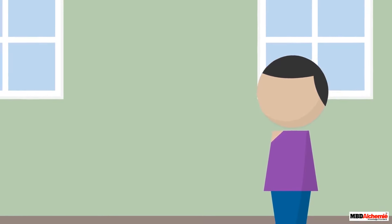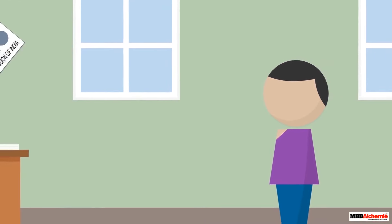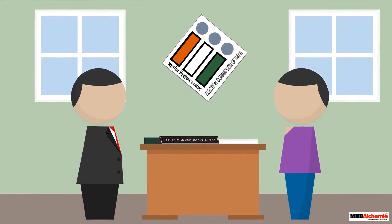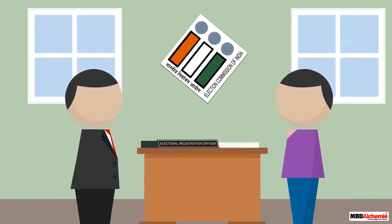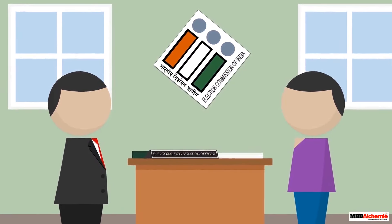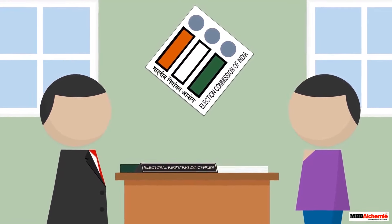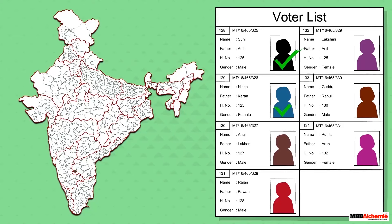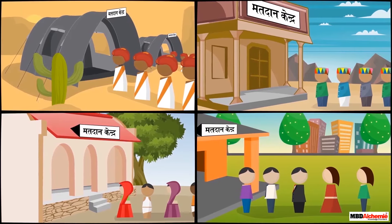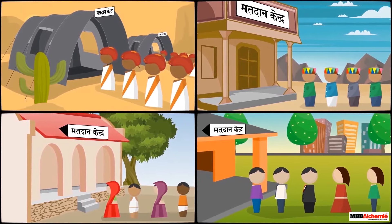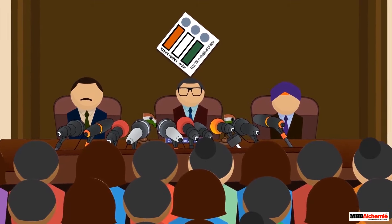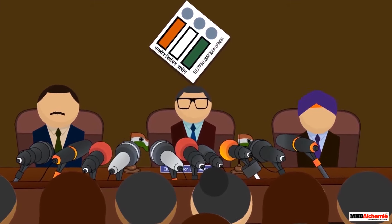A person who is eligible to vote but does not have his name registered on the electoral roll can apply to the electoral registration officer of his constituency. The officer in response updates the register accordingly. With a list of constituencies and voters in place, the country can go for elections when they are due.